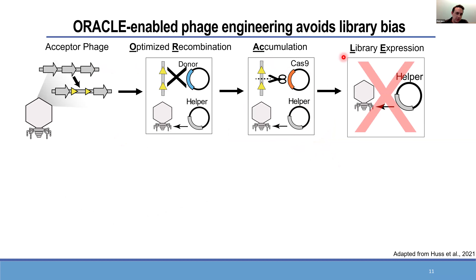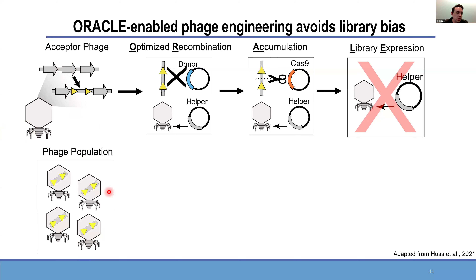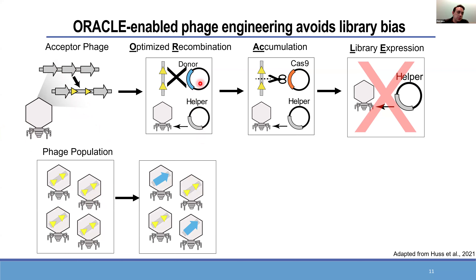A few years ago, we published a process called ORACLE — Optimized Recombination Accumulation Library Expression. ORACLE came out of wanting to do a deep mutational scan on part of the T7 bacteriophage, and there being no method to make the library to do that effectively. To walk through how it works: we take a phage chassis, remove a gene of interest and replace it with recombinase sites shown as yellow triangles. The phage population at that point is entirely acceptor phage with no wild-type contamination. These phages are passaged on a host with two plasmid systems — the first uses recombinase to swap in a variant, and the second provides a prodigious amount of the wild-type protein in trans.